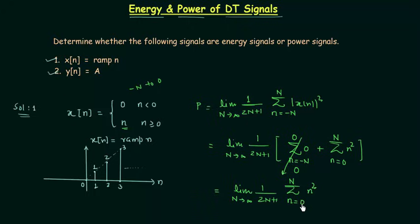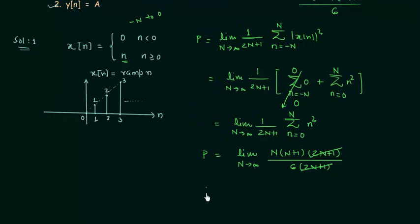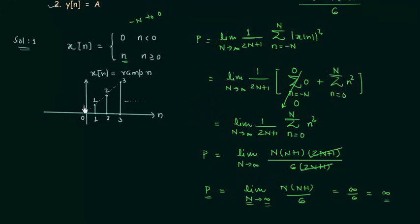We have limit N tends to infinity of (1/(2N+1)) times the summation from n = 0 to N of n². The sum of n² from n = 0 to N is equal to N(N+1)(2N+1)/6, because the sum of squares of first N natural numbers equals N(N+1)(2N+1)/6. So the average power P equals limit N tends to infinity of N(N+1)/6. As N approaches infinity, we get infinity divided by 6, which is infinity. So the average power P is equal to infinity for signal x[n].